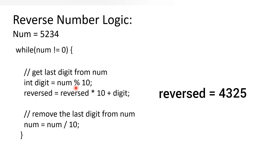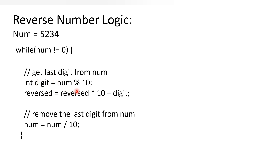So these are the steps to get the reverse of a number. First, continue the loop until the number becomes 0. Second, always get the unit place digit using the expression num modulus 10. Third, apply the logic: reversed equals reversed into 10 plus digit. Finally, update the number each time by dividing by 10 to remove the unit place.